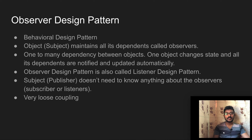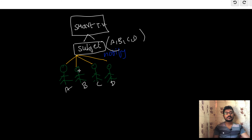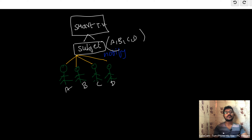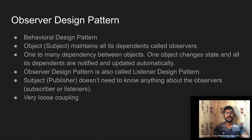There is very loose coupling here. A, B, C, D are the observers linked with the subject. It is a one-to-many dependency — subject is one and observers are many — so it is a very loose coupling.